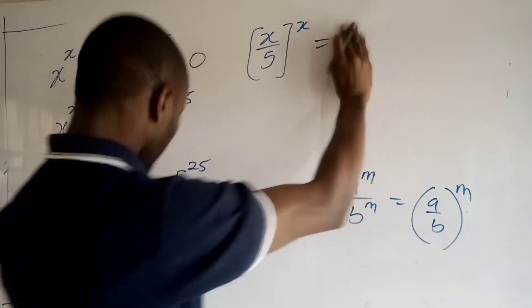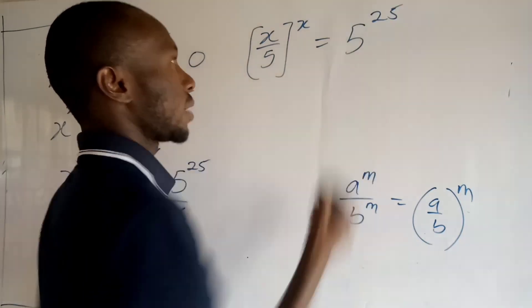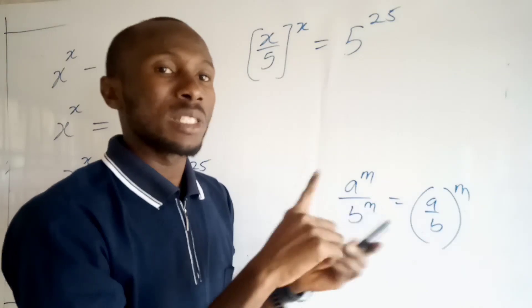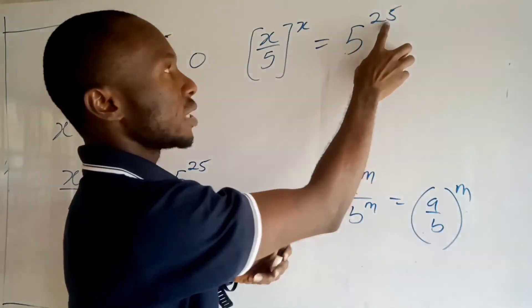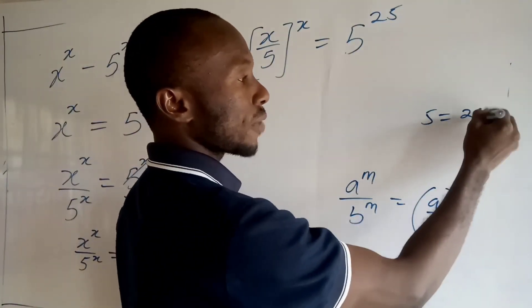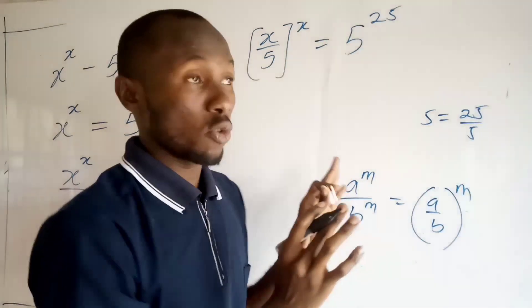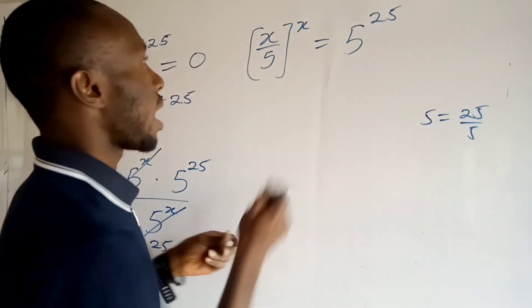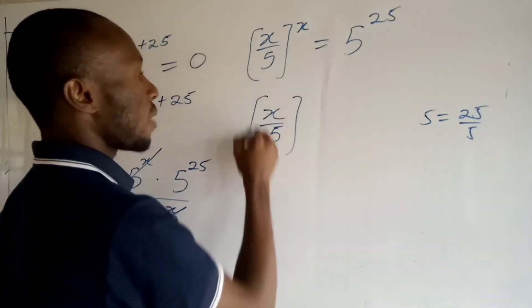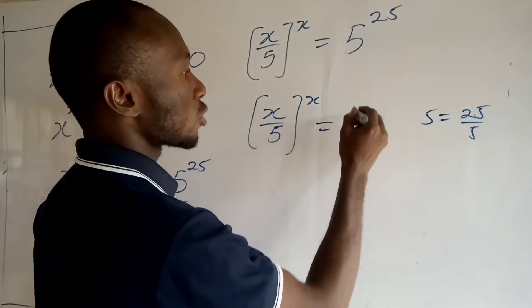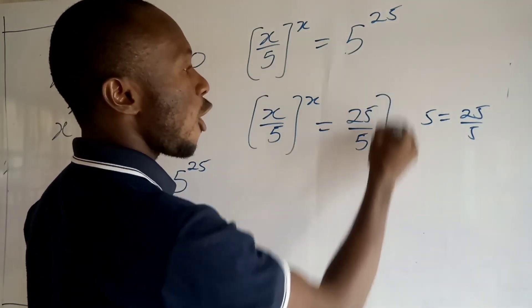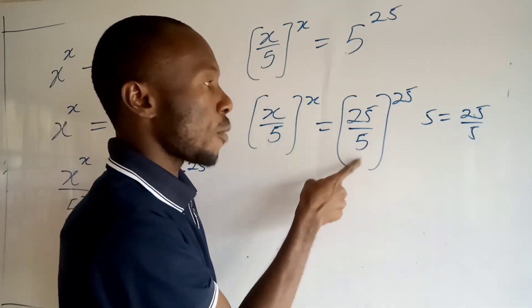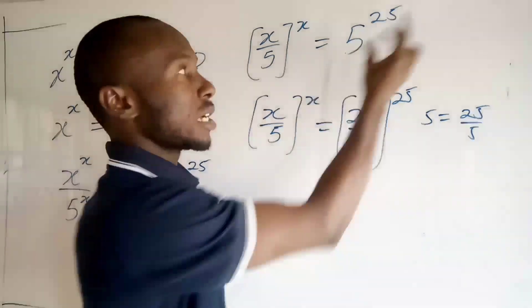So I have x over 5, all to the power x, is equal to 5 to the power... Now creatively, 5 can also be written as 25 over 5. So I can rewrite the right-hand side as 25 over 5, all to the power 25. That's perfectly valid because 25 over 5 is just 5.